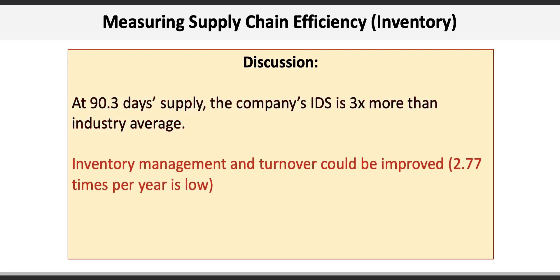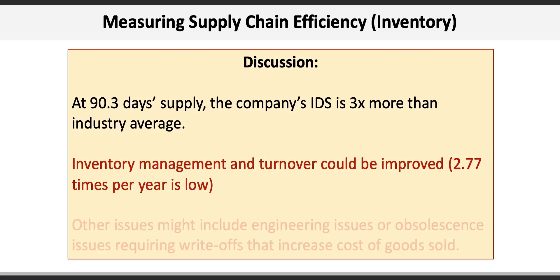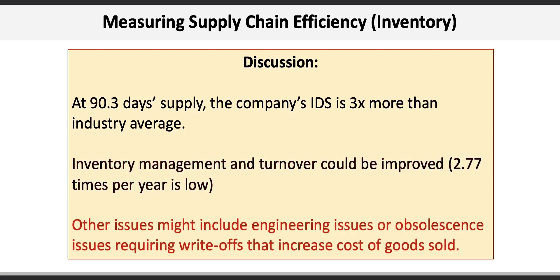Clearly inventory management can be improved. We would also like to see higher times per year turnover, which results in turning inventory more frequently in terms of days. Usually low turnover, like we see in this problem, is associated with high inventory day supply — the more supply on hand, the slower it turns over. These results could be related to other internal issues as well, such as engineering problems or obsolescence requiring write-offs that would increase cost of goods sold.